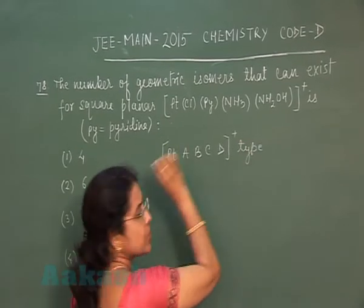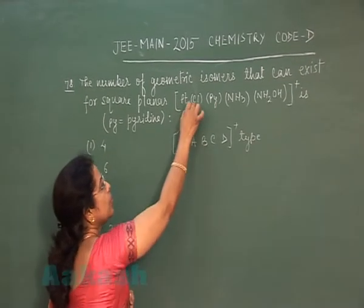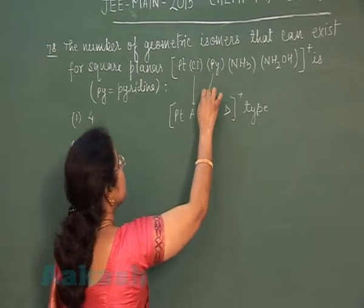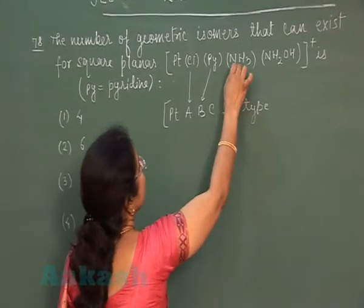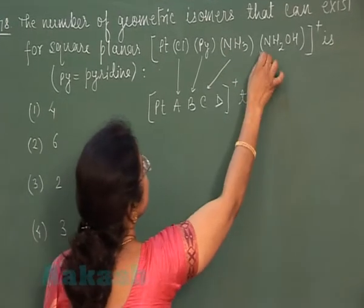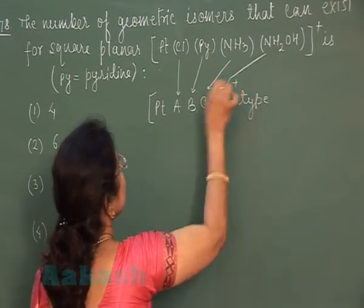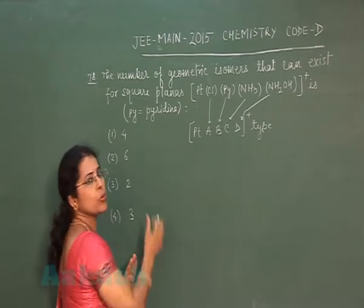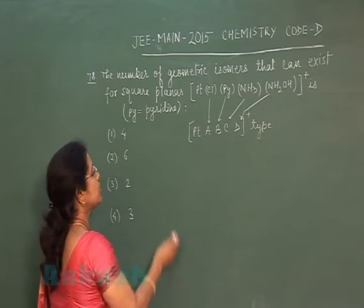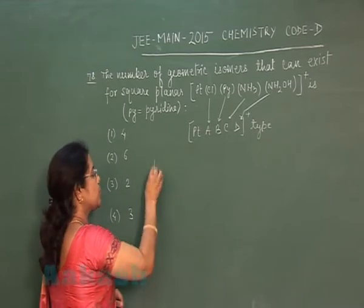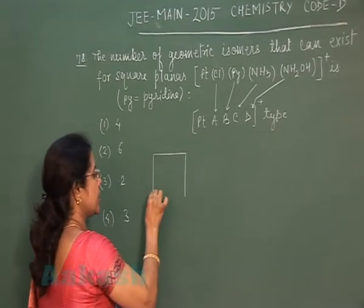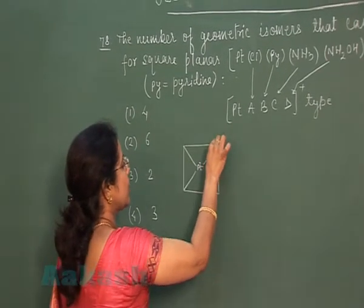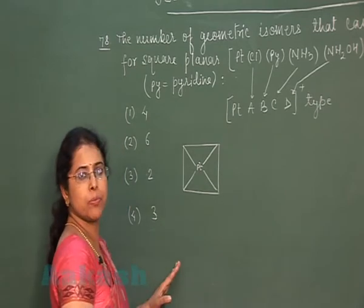We represent the ligands as: chlorine = A, pyridine = B, ammonia = C, and NH₂OH = D. This is a square planar complex where all four ligands are lying in the same plane. The possibility of geometrical isomerism exists for this complex.